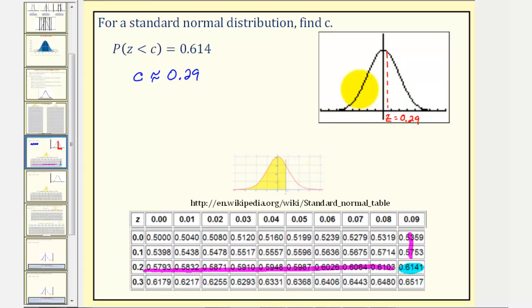Then the area to the left under our curve would be approximately 0.614, which would also be the probability that a randomly selected data value would have a Z-score less than 0.29. I hope you found this helpful.